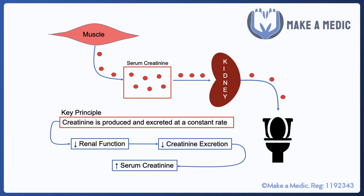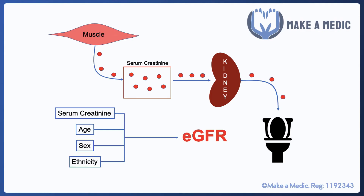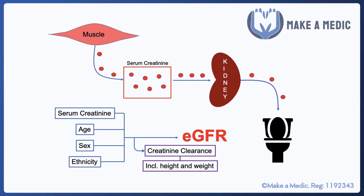This is why creatinine is used as a marker of kidney function. Given that there are a few other factors that contribute to creatinine concentration aside from just kidney function, there are a number of different formulae and calculations that can be done to estimate the glomerular filtration rate based on the serum creatinine and a few other factors. It can be taken into account alongside the age, sex, and ethnicity of a patient to determine the estimated glomerular filtration rate. There is also another calculation referred to as creatinine clearance, which also includes the height and weight of the patient as a surrogate marker for how much muscle mass they are likely to have.